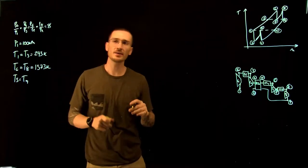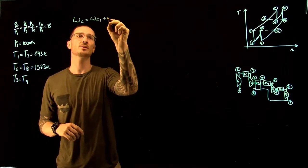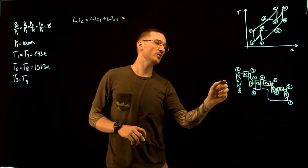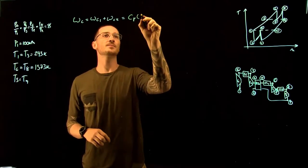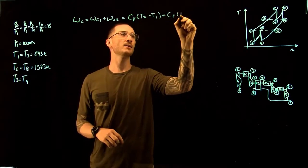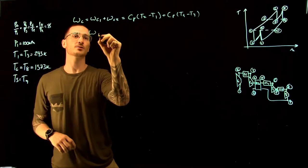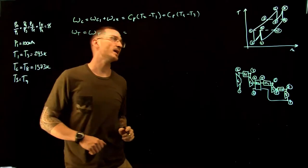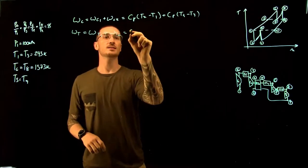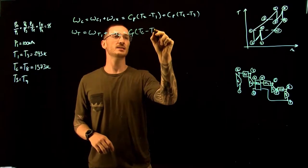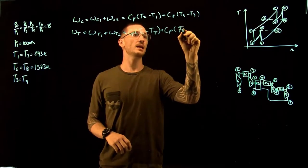Converting to Kelvin. The work of the compressor equals W_C1 + W_C2, which is the change in enthalpy from 1 to 2 plus 3 to 4: Cp(T2 − T1) + Cp(T4 − T3). The work of the turbine equals W_T1 + W_T2, the change in enthalpy from 6 to 7 plus 8 to 9: Cp(T6 − T7) + Cp(T8 − T9).